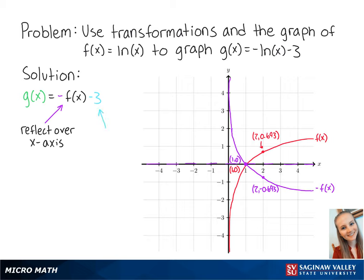Subtracting 3 from the function means that we will shift the new graph down by 3 units. So our new points are at 1 negative 3 and 2 negative 3.693.